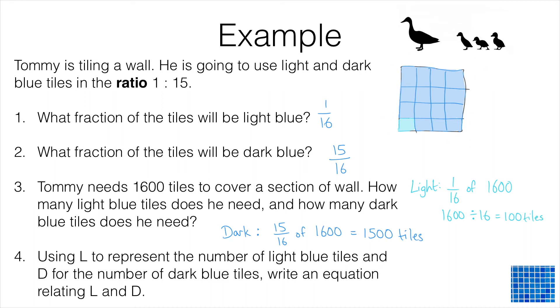But even if he's putting up more tiles, in this case let's say 1600, what you will find is that there are 15 times as many dark tiles as light tiles. 15 times 100 makes 1500 and that's always going to be true because of this ratio.